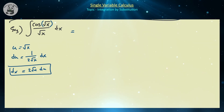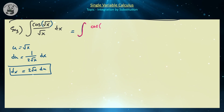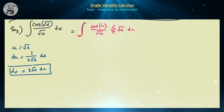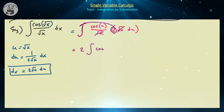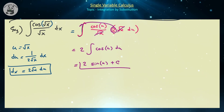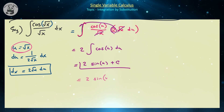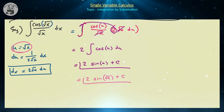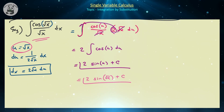Substituting: the integral of cosine of u divided by √x times 2√x du. The √x's cancel and the 2 factors out, giving 2 times the integral of cosine of u du. The antiderivative of cosine is sine, so this equals 2 times sine of u plus c. Switching back, this is 2 times sine of √x plus c. You can verify that differentiating this gives cosine(√x) divided by √x.